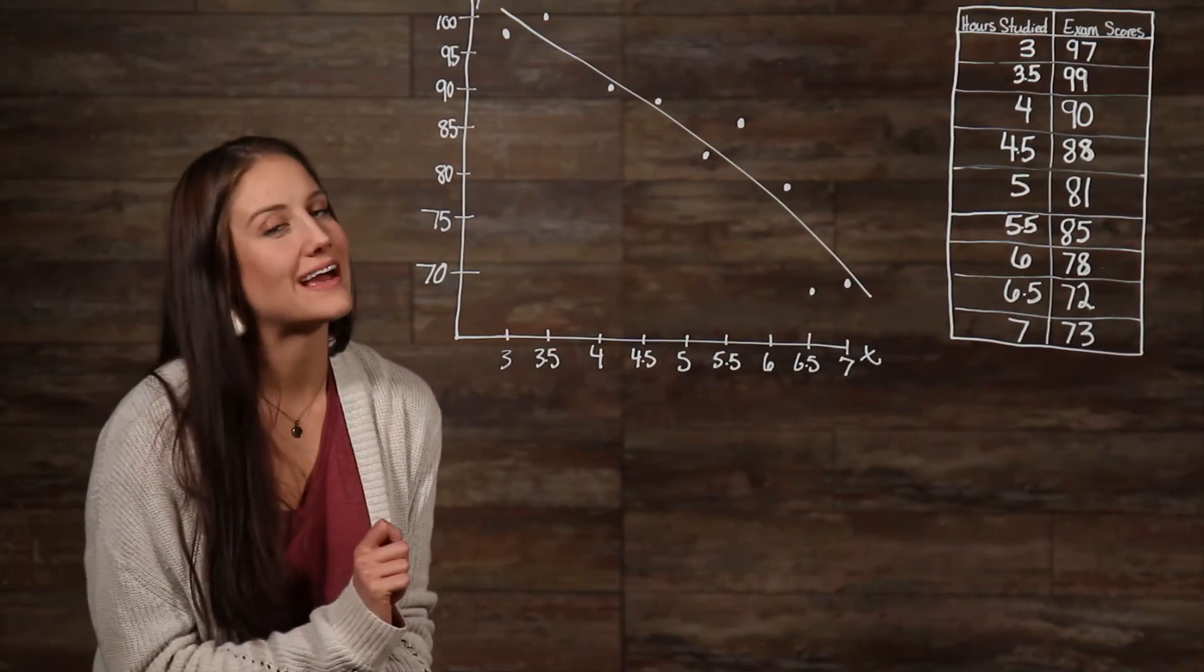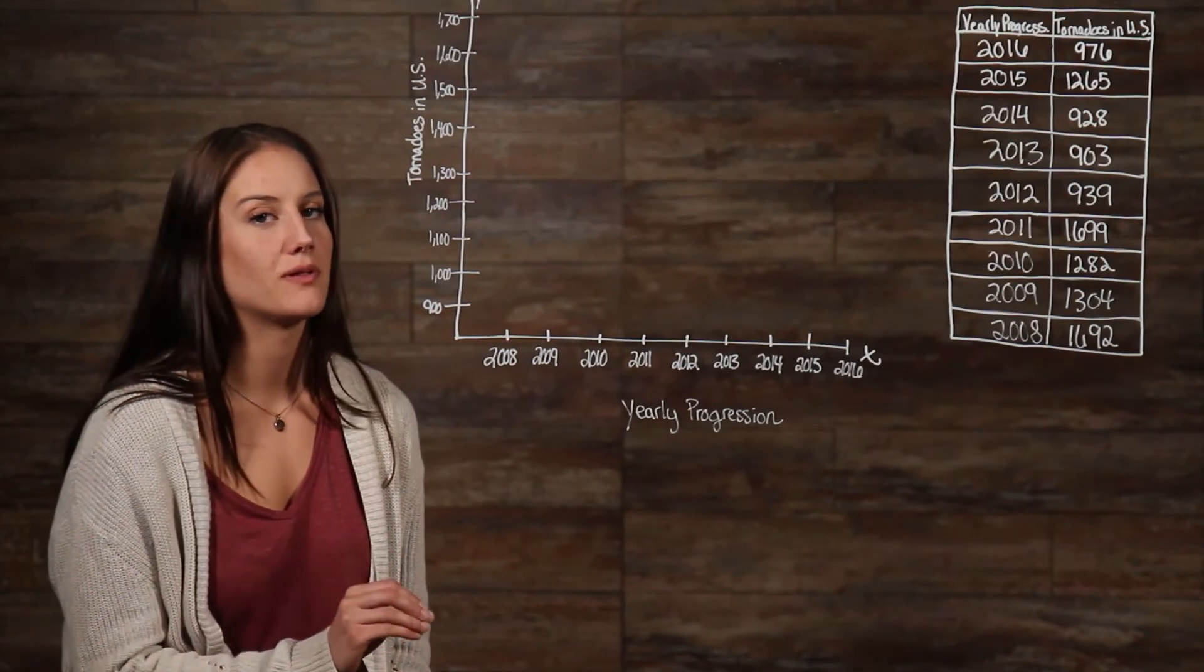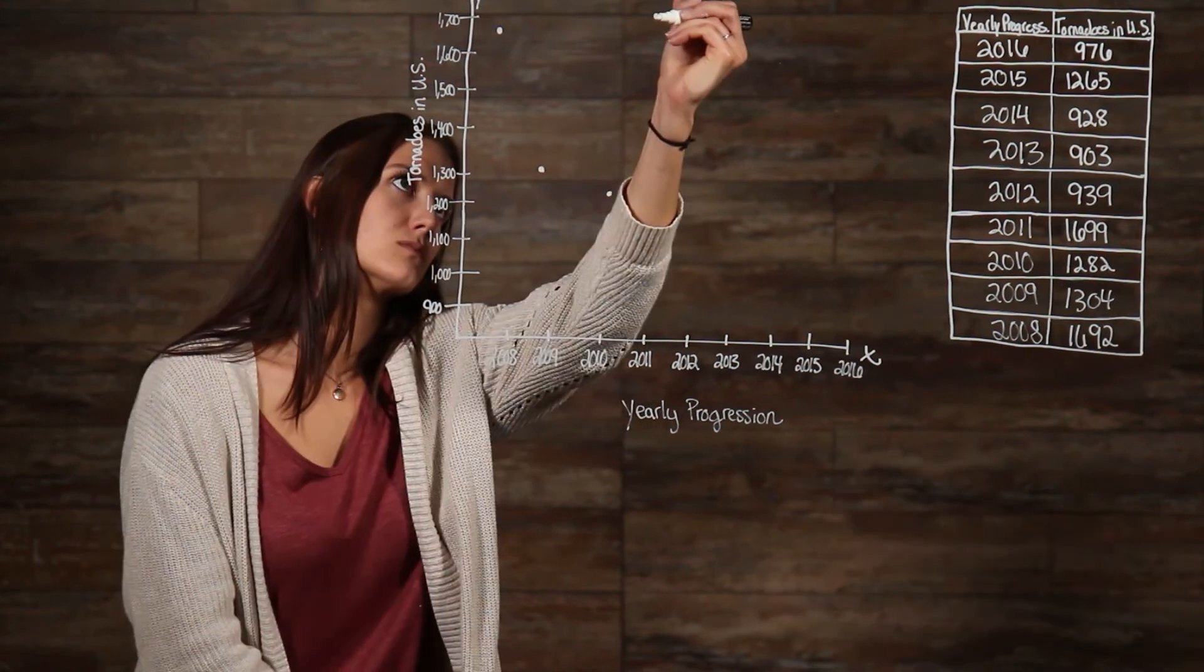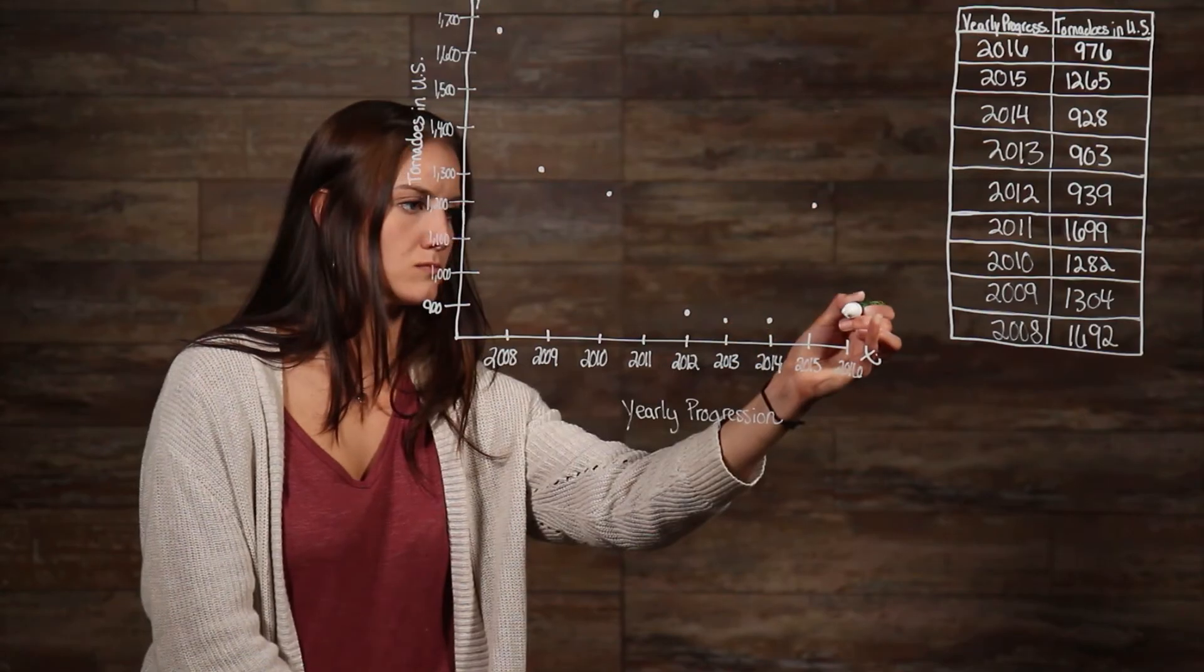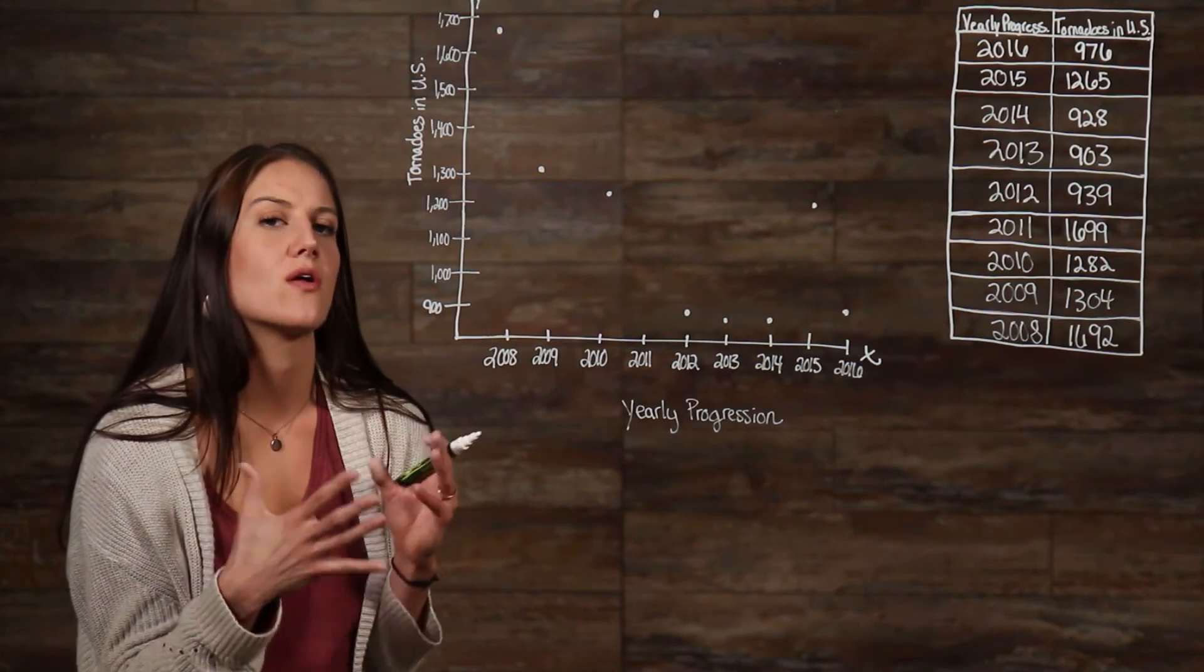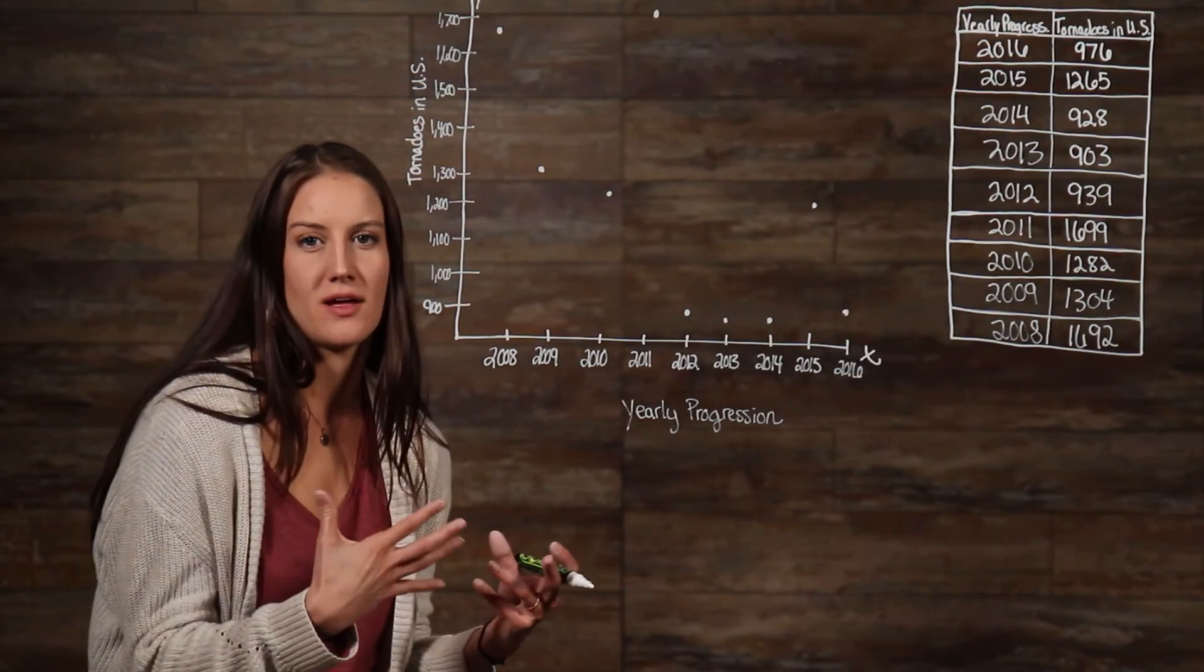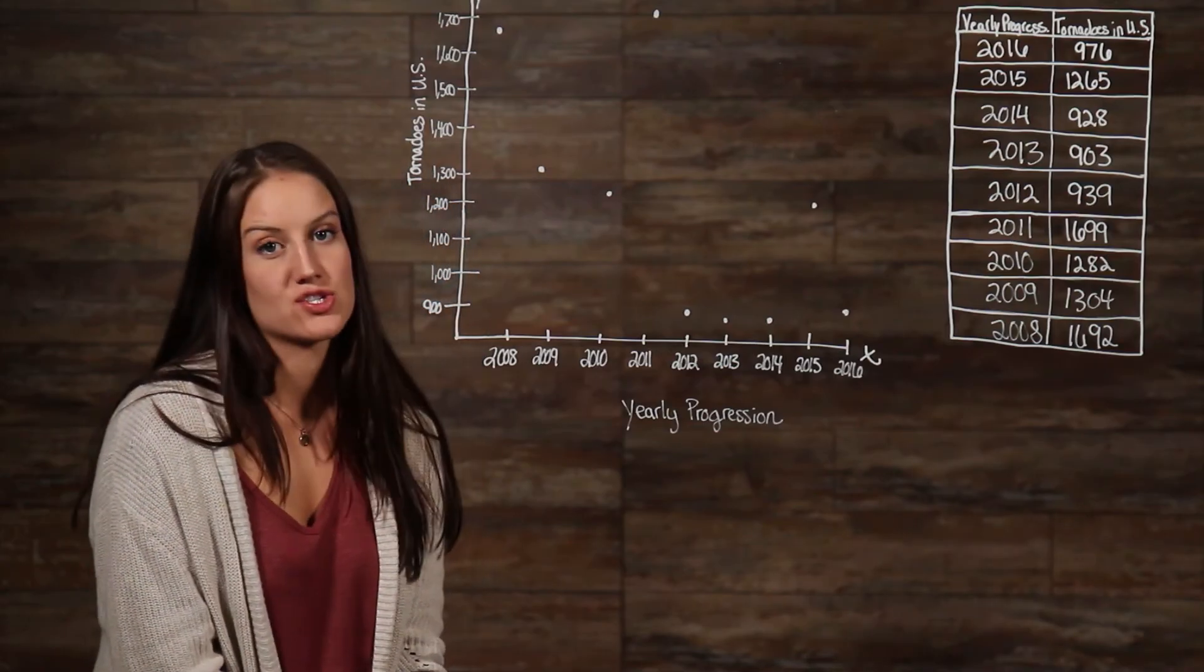Now, let's take a look at one last example. We need to plot our points the same way that we plotted the last two. We can see that in this example, there doesn't appear to be an overwhelming positive or negative relationship. When you have a scatter plot that doesn't have a positive or negative relationship, it's said to have no relationship.